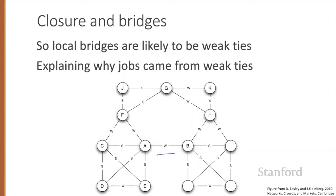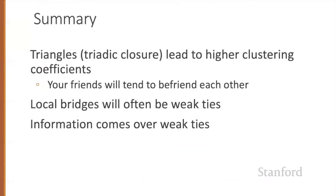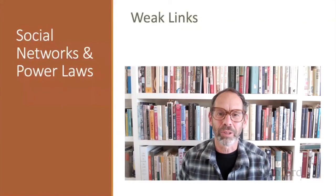That explains why jobs came from weak ties. The local bridge is the source of new information — people across the bridge knew different people than me. Weak ties can occur between two cohesive groups, like a former colleague or an old college friend, and these ties carry different information than close contacts. Granovetter found that jobs from weak ties came along very short paths, compatible with the Watts-Strogatz small world model. In summary: triadic closure leads to higher clustering coefficients, your friends tend to befriend each other, local bridges are often over weak ties, and information comes over those weak ties — the surprising strength of weak links.